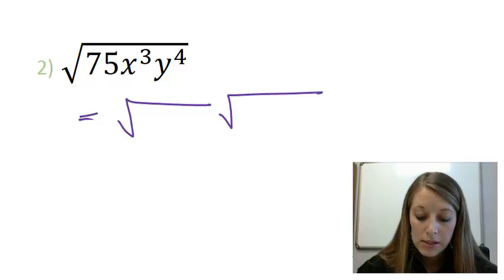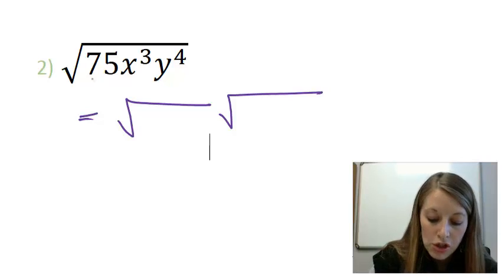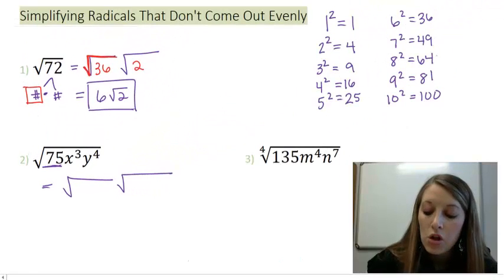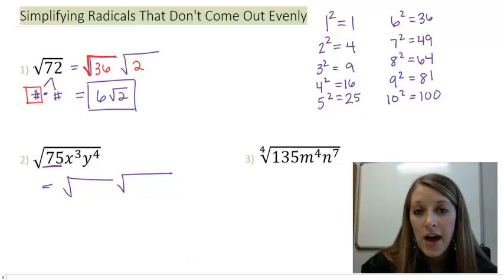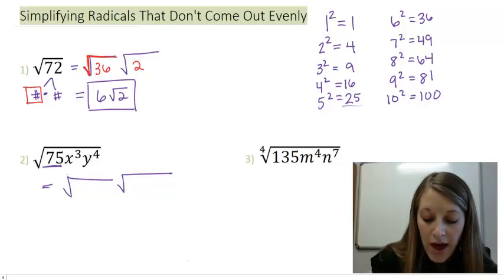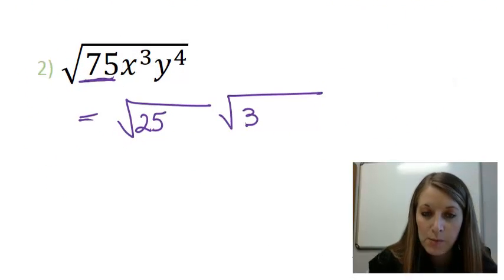Now, I do have numbers and two different variables in this example. I suggest you take it piece by piece. So let's just start with 75. Looking at my list of squares over here, I notice that 75 isn't on this list of squares, which means it doesn't all go into my first root. But I can divide 75 by one of these squares evenly. And the largest one to do that is 25.